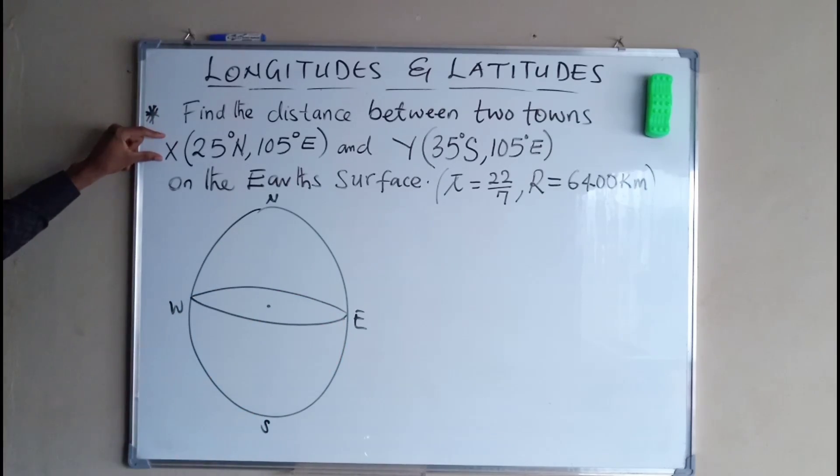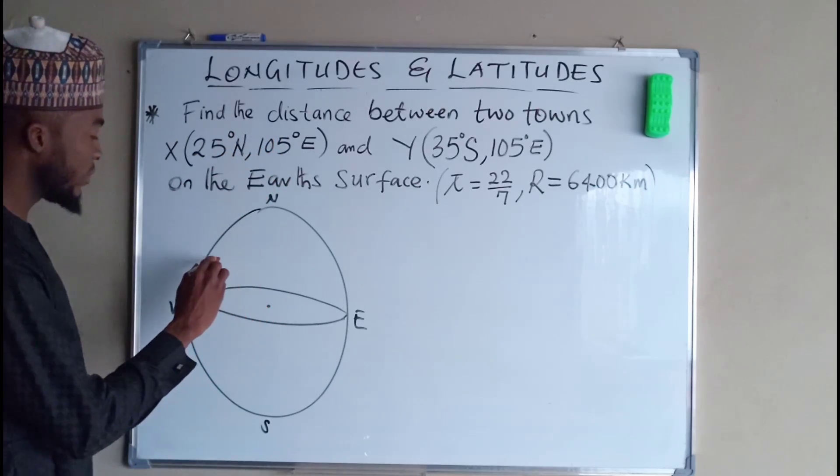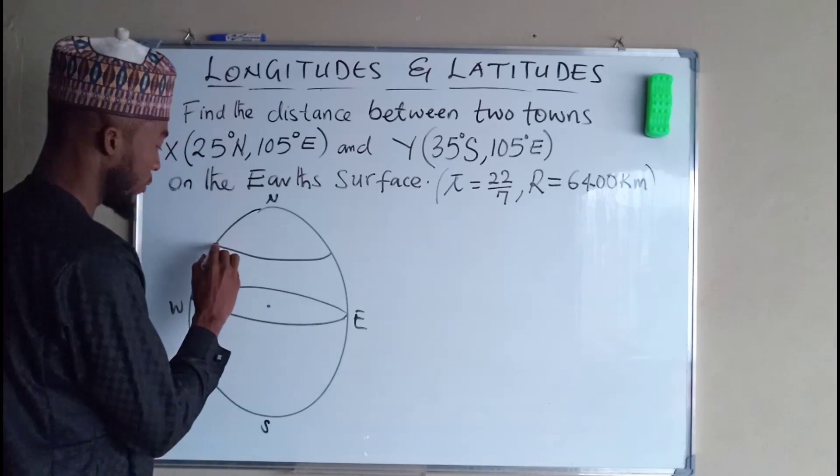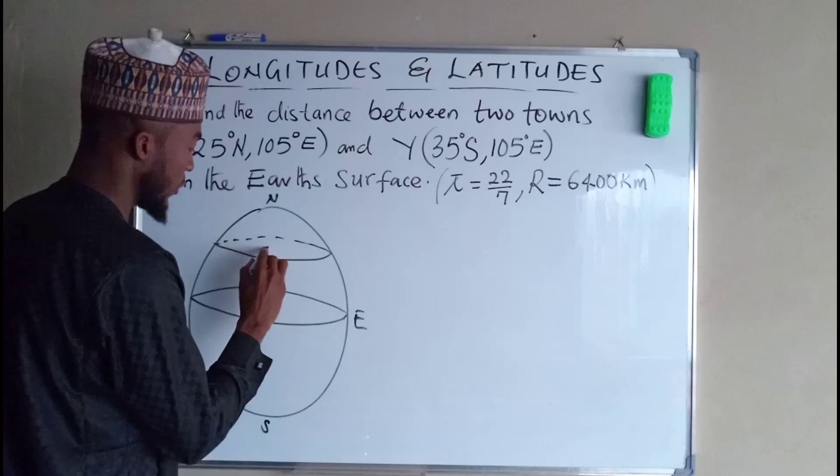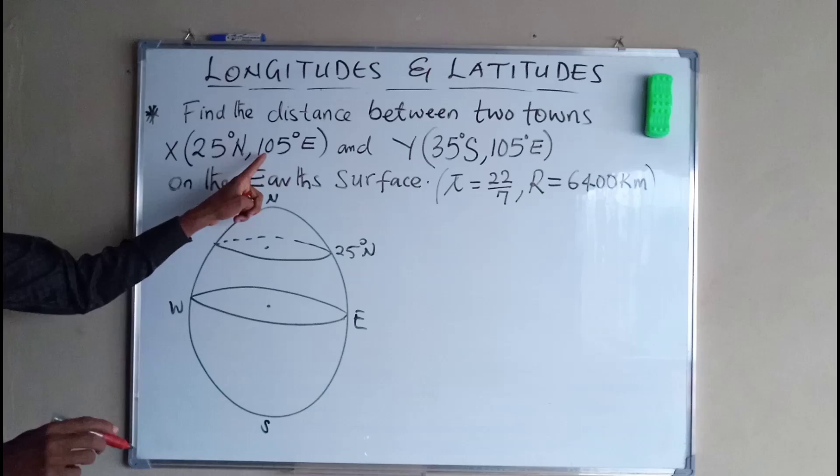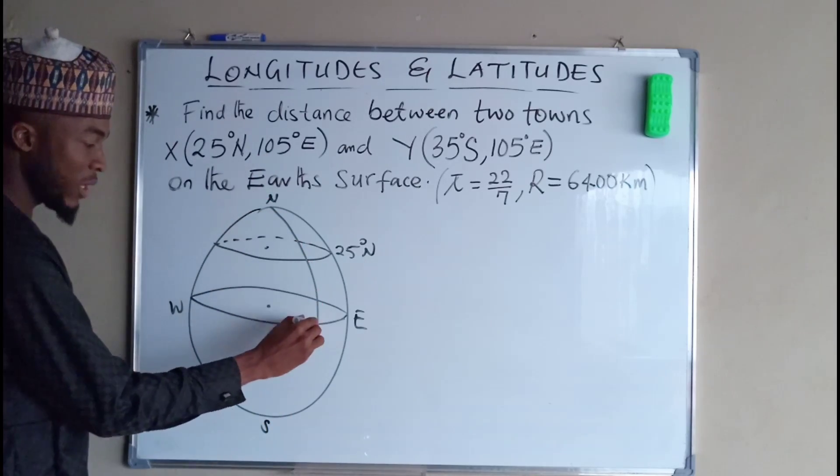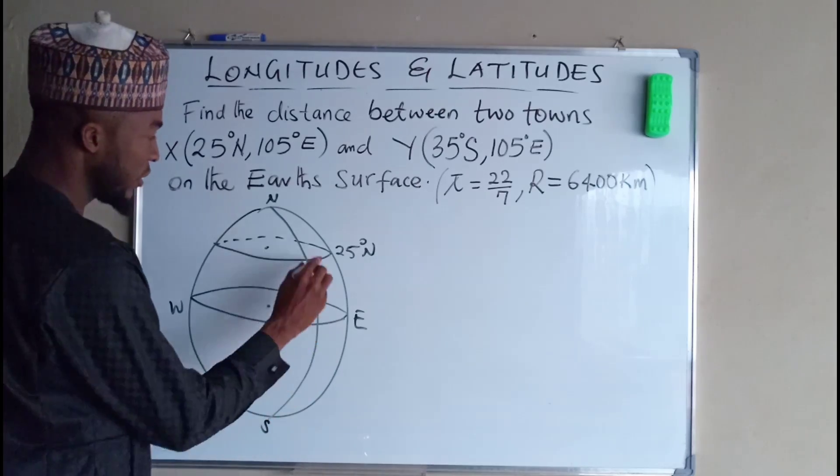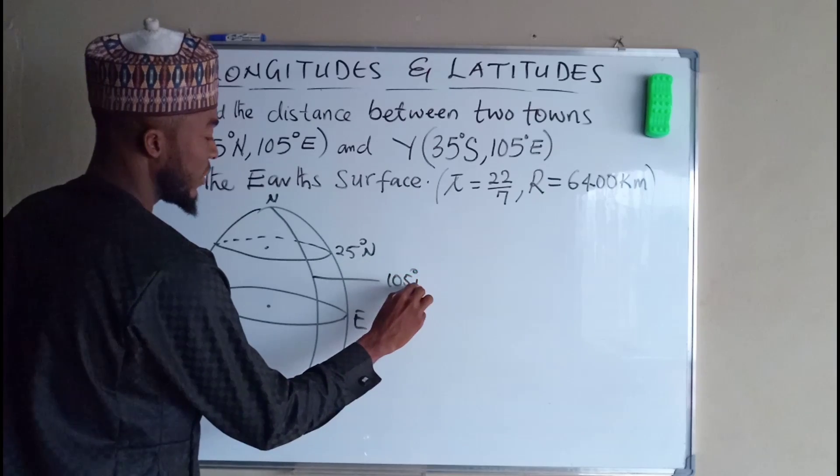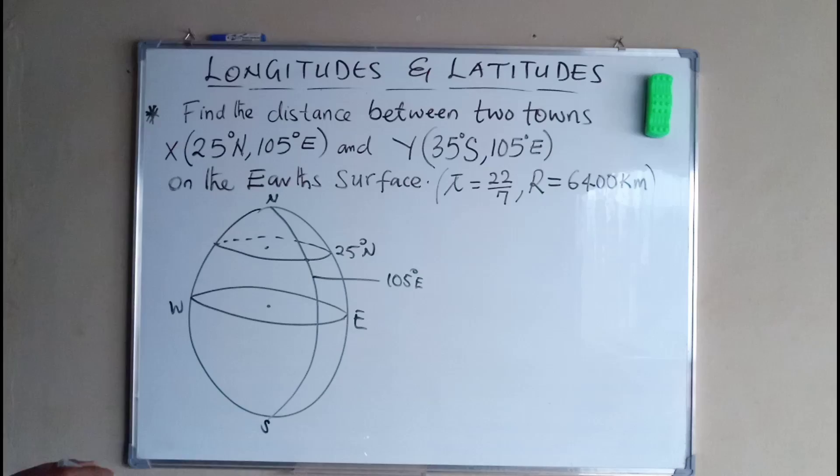It's a latitude so 25 degrees north, towards north direction. By estimation we have something like this. 25 degrees north and the longitude of 105 degrees east, towards east direction. This longitude is 105 degrees east, so the intersection between latitude and longitude will determine the location which is town X.